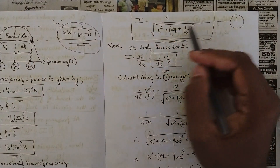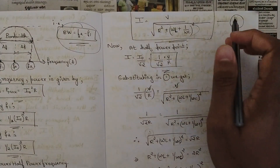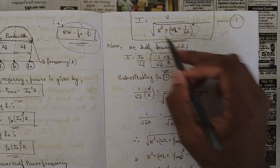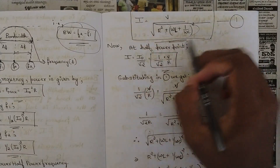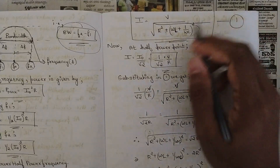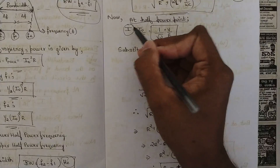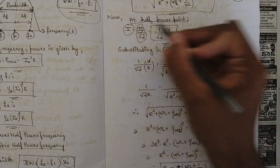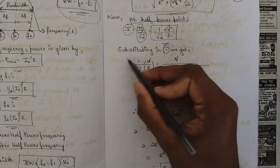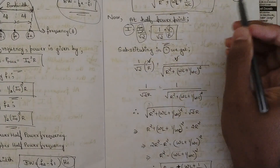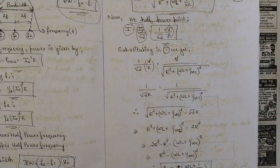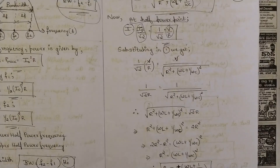So i = v divided by the impedance value, that is the square root of R² + (ωL − 1/ωC)². I'll call this Equation 1. At the half power point, we know that i is represented as i₀/√2, where i₀ = v/R. Now substituting the value of i at the half power point into Equation 1, we are representing things in terms of bandwidth.